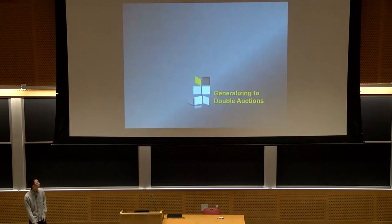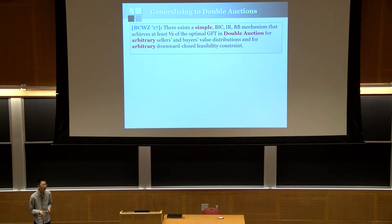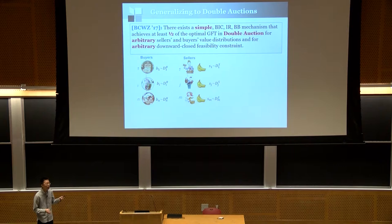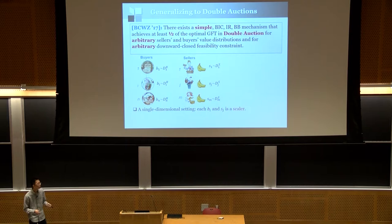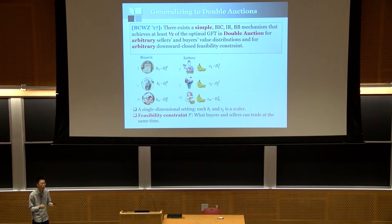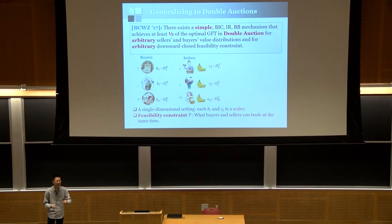The second main contribution is extending this half-approximation to the more general setting of double auctions, where each seller owns one item of the same type and each buyer wants one of them — a single-dimensional setting where each value is a scalar. We also allow arbitrary downward-closed feasibility constraints on which buyers and sellers can trade simultaneously. For example, if the feasibility constraint allows all buyer-seller pairs of size at most K, then at most K pairs can trade at the same time.